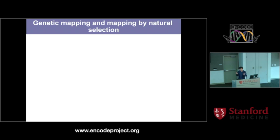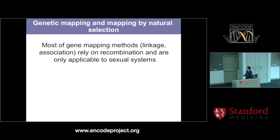I'll start with a very simple statement: the problem is very complex, because most of what we know about gene mapping and detection of natural selection is not applicable to our situation. When you think about methods for gene mapping and detection of natural selection — linkage, statistical association, the whole toolkit of statistical genetics — the problem is that all of these methods fundamentally rely on recombination. They are only applicable to sexual systems, not to asexual systems.